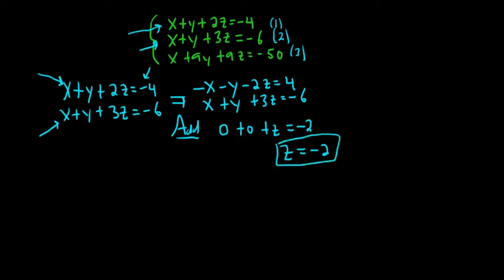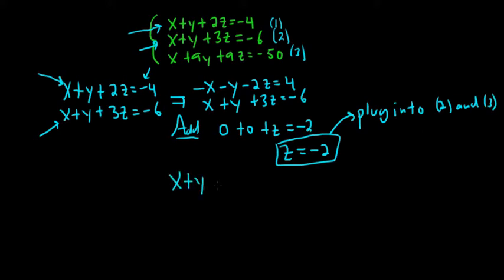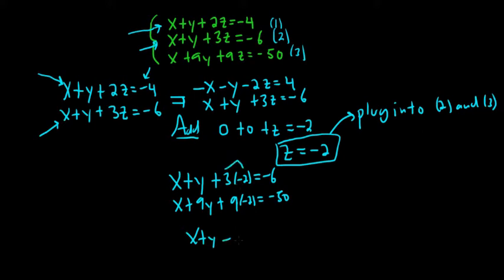So we have z. Once we have z, we can plug it into another two equations and find x and y. Let's plug it into equations 2 and 3. So equation 2: x plus y plus 3 times negative 2 equals negative 6. And equation 3: x plus 9y plus 9 times negative 2 equals negative 50. That means we have x plus y minus 6 equals minus 6, and x plus 9y minus 18 equals minus 50.